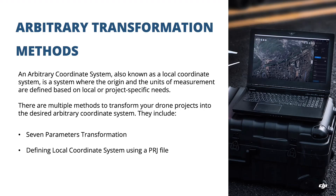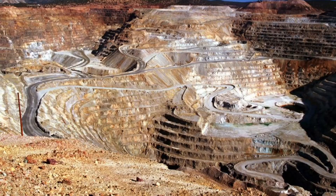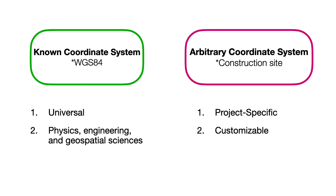An arbitrary coordinate system, also known as a local coordinate system, is a system where the origin and units of measurement are defined based on local or project-specific needs. This type of system is often used in construction sites or mining operations where the area being surveyed is large and there isn't a known or standard coordinate system available. While a known coordinate system is universally accepted, an arbitrary coordinate system is project-specific and used when a known system is not applicable or convenient.